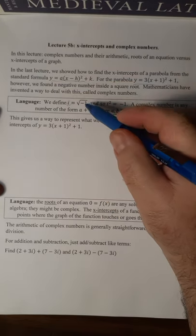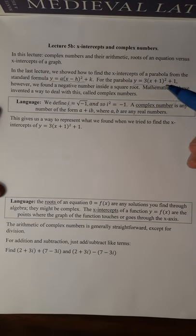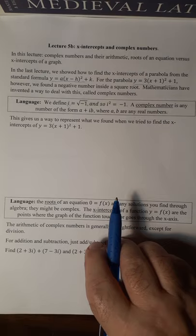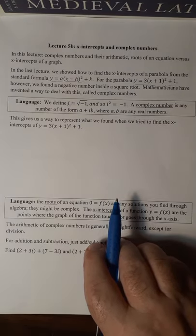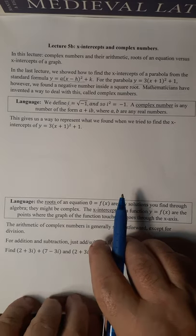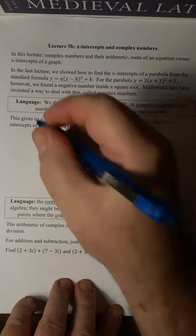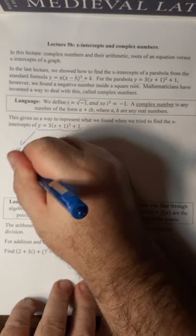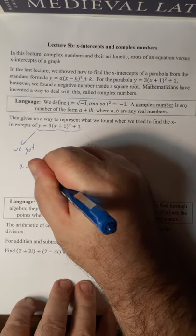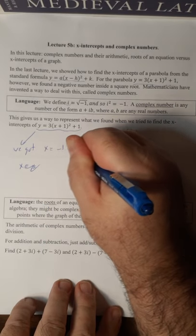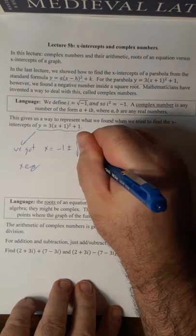So we define i to be the square root of minus 1, which means i squared equals minus 1. And a complex number is any number of the form a plus ib, where a and b are real numbers. And then we just have the i floating around there. So we tried to find the x-intercepts of this, and we got x equals minus 1 plus or minus the square root of minus 1 over 3.